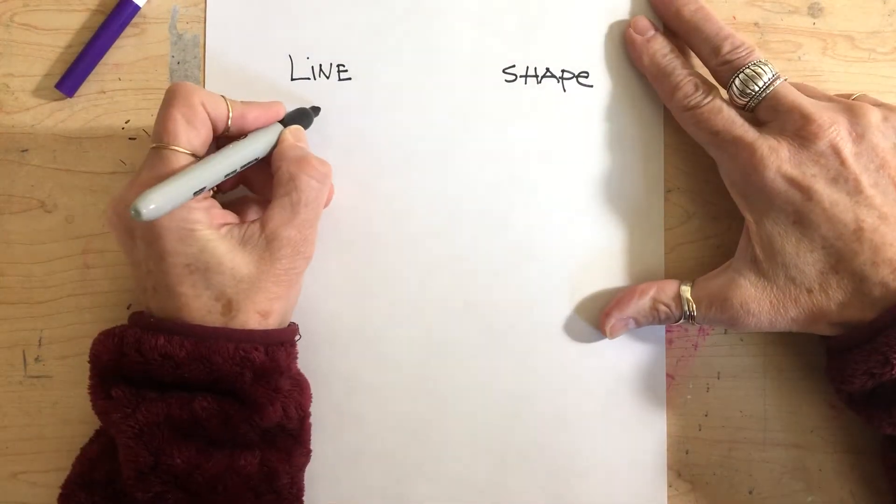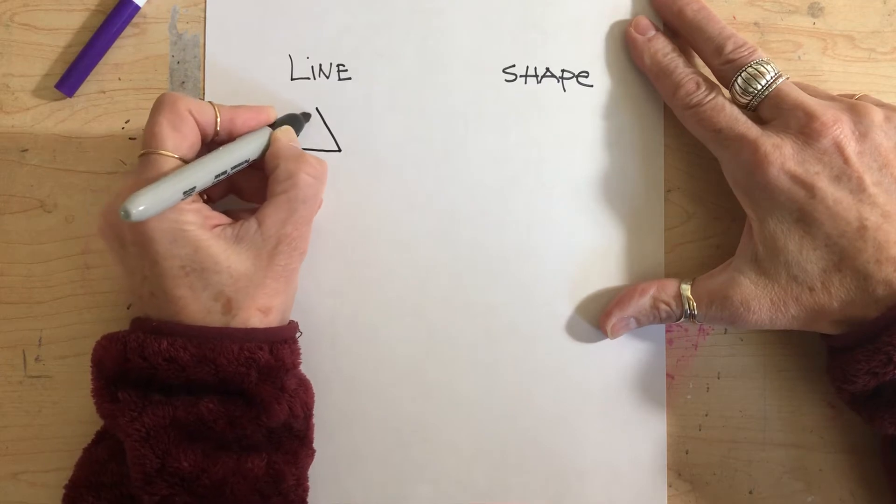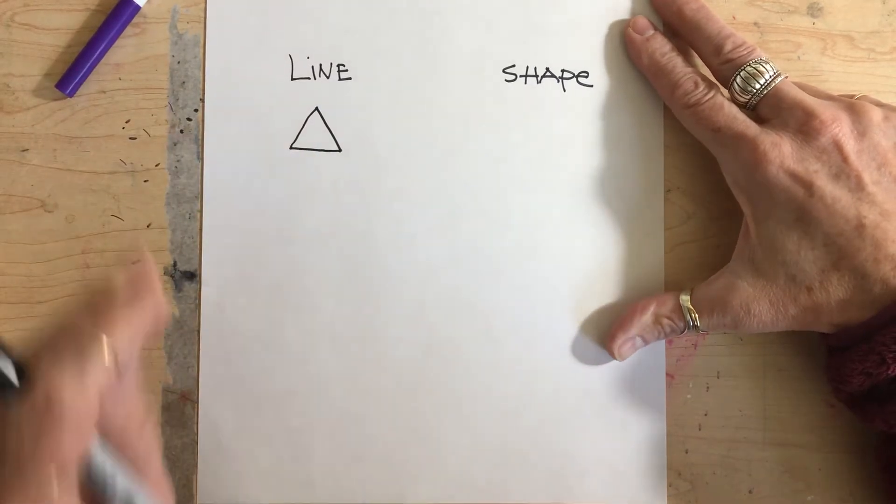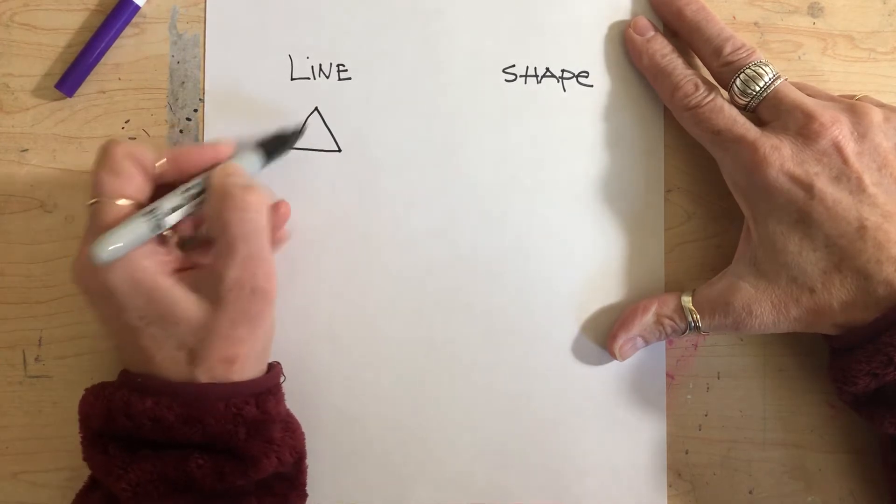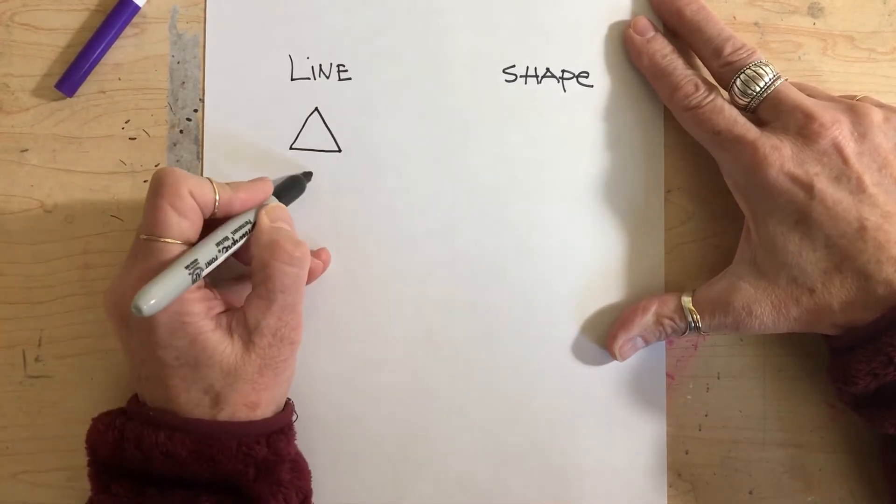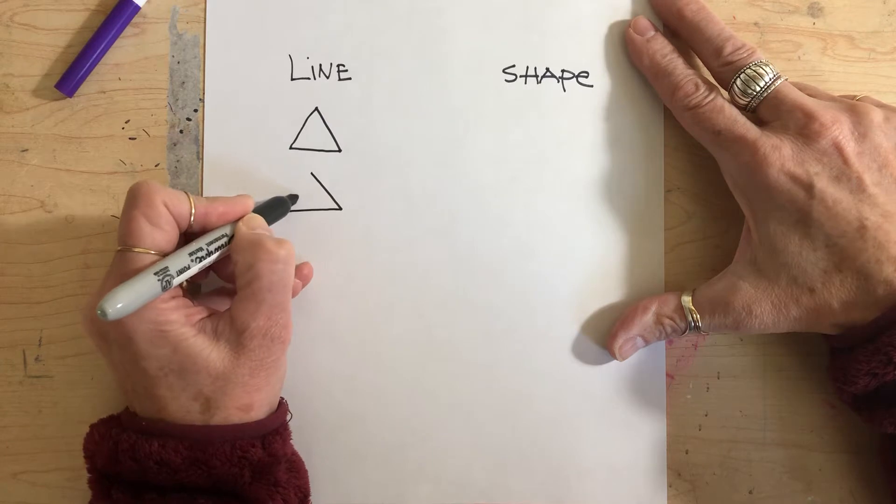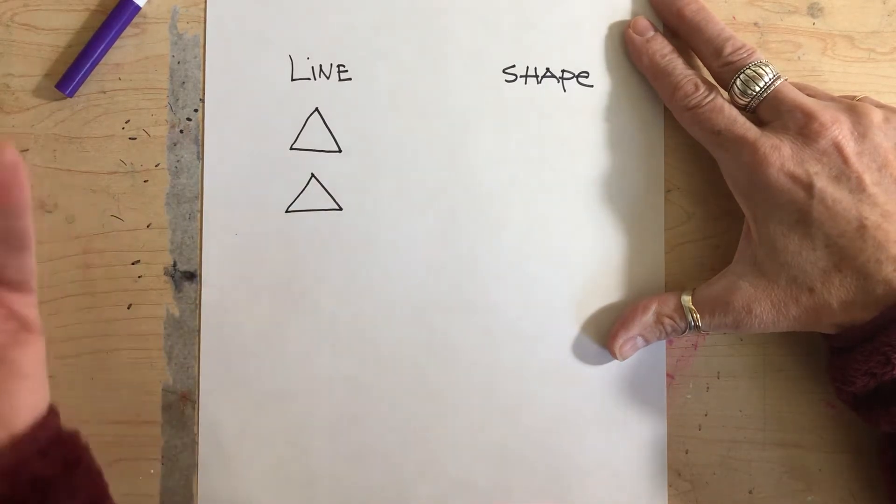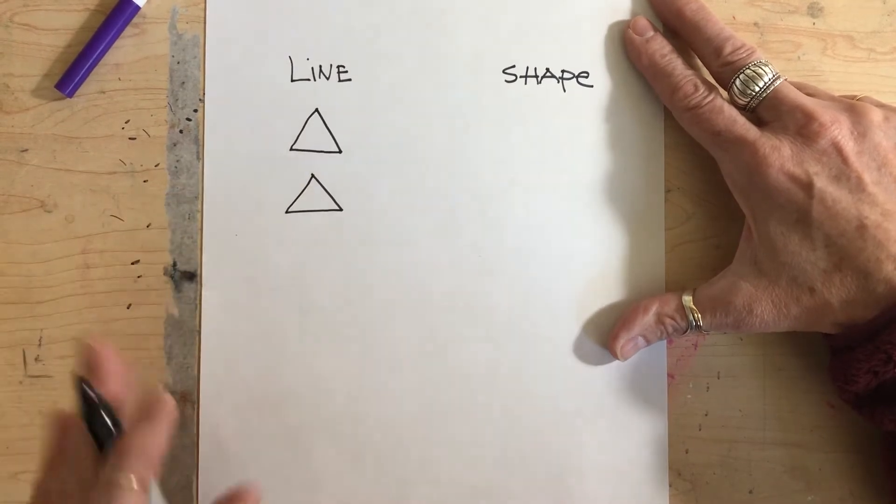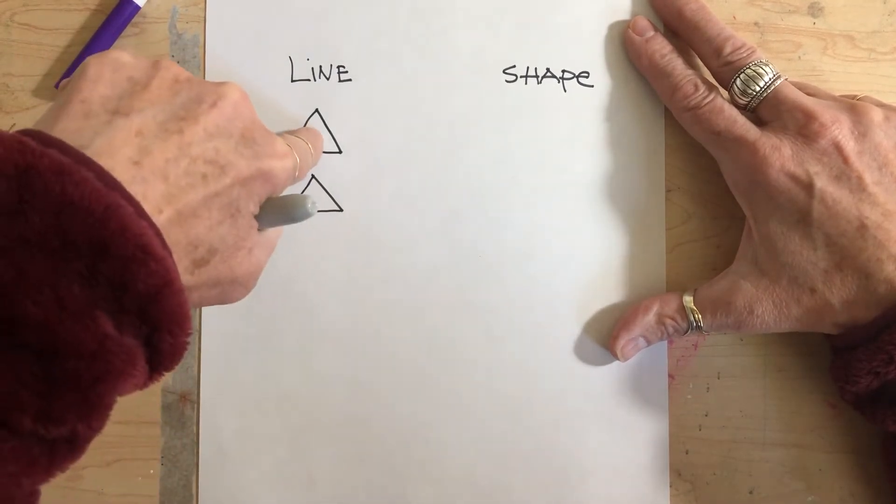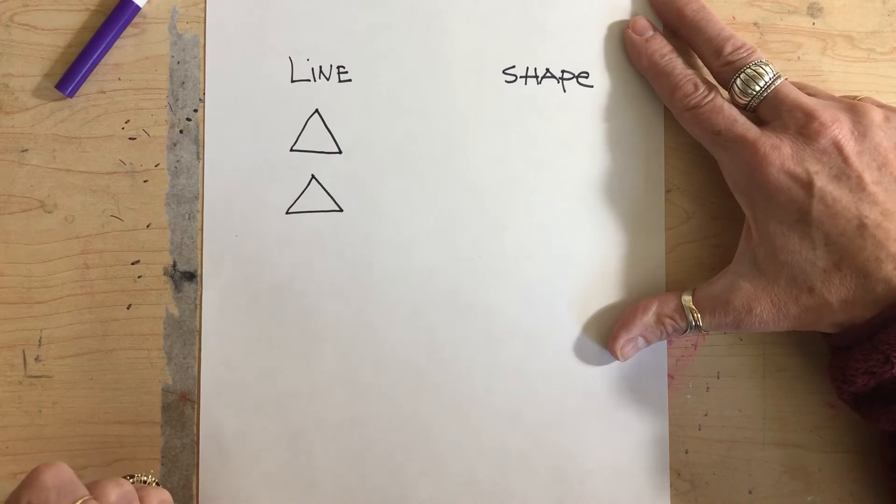A lot of people think that this is a shape, but it really isn't. It is three lines connected, you could say, or it's one continuous closed line, depending on how you draw it, but it's not a shape. It's actually a white shape with a black outline.